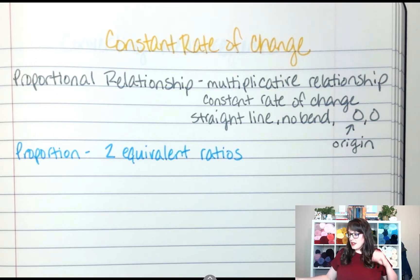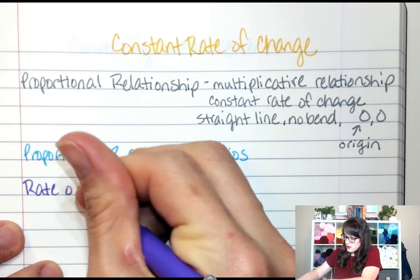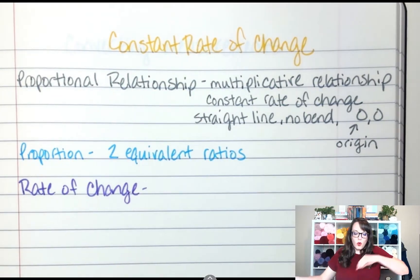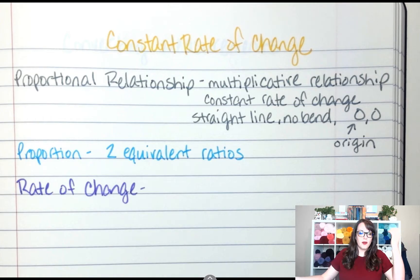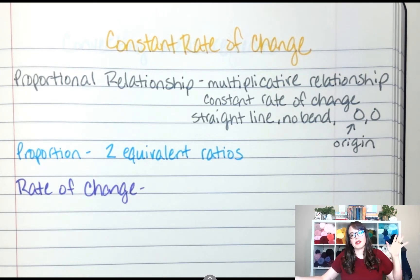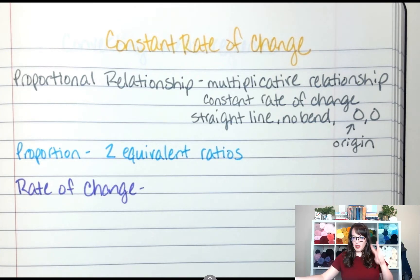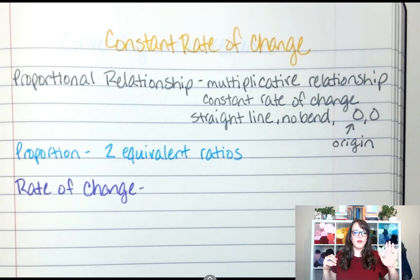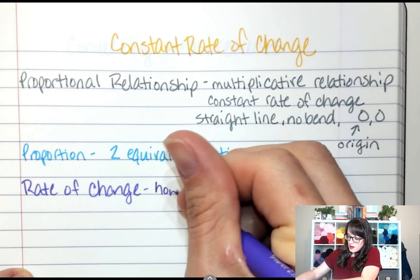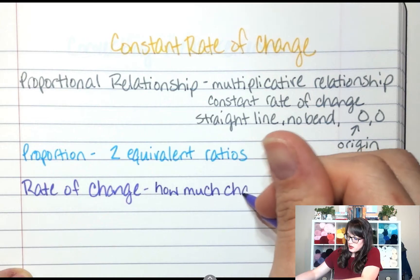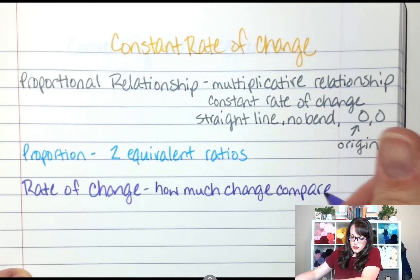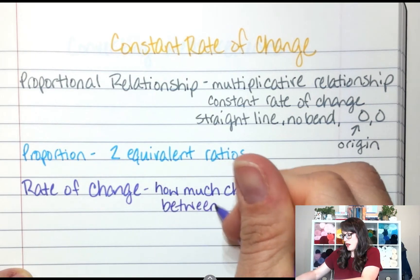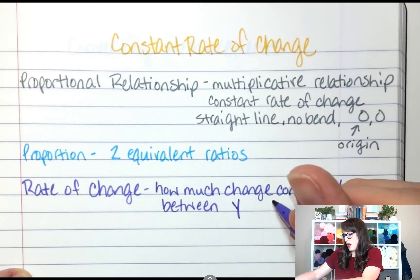So when we're dealing with rate of change, which is what we're talking about. Rate of change. It's talking about how much one thing compares or how much one thing changes in comparison to the other thing. So remember we're comparing two things. We have two equivalent ratios. We're comparing two things. They have a relationship. So rate of change is looking at how much one of those things is changing compared to the other thing. So how much change compared between we'll say two values. We're going to go math. Y to x.